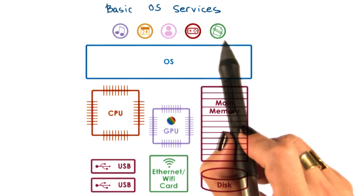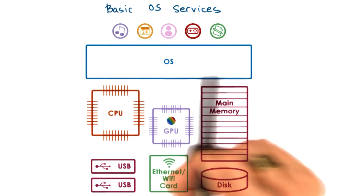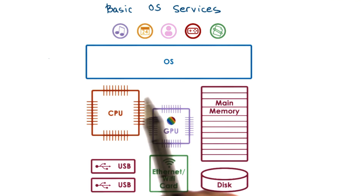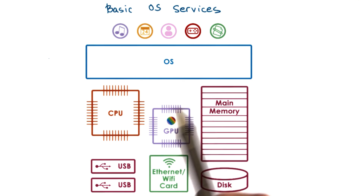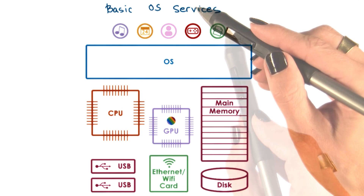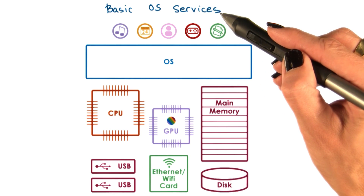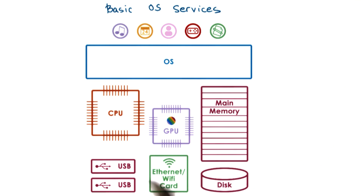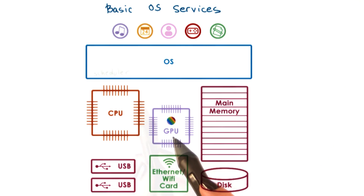An operating system provides applications with access to the underlying hardware. It does so by exporting a number of services. At the most basic level, these services are directly linked to some of the components of the hardware.